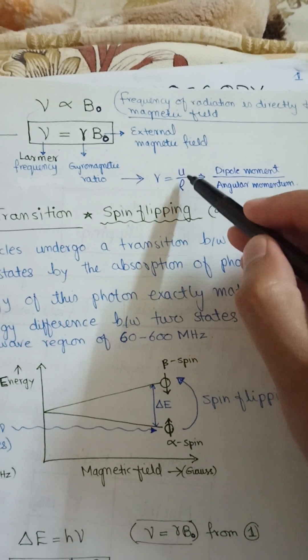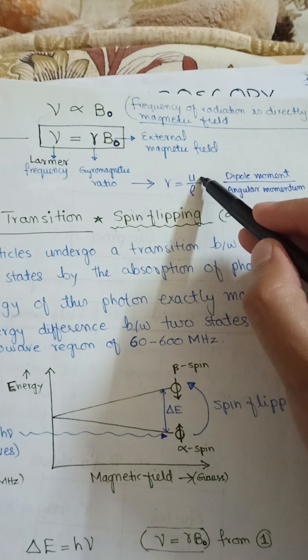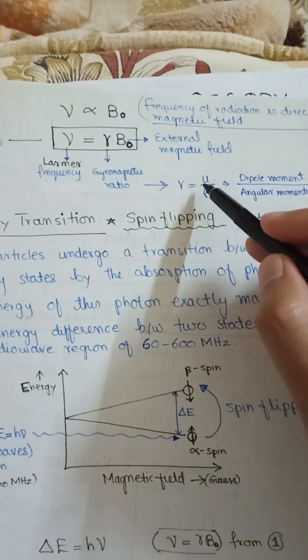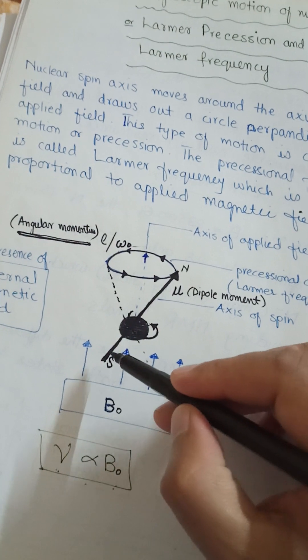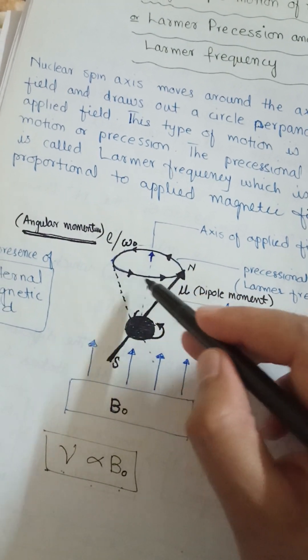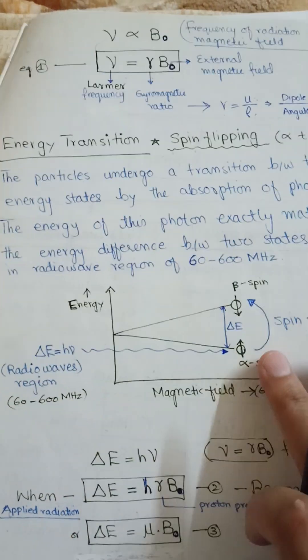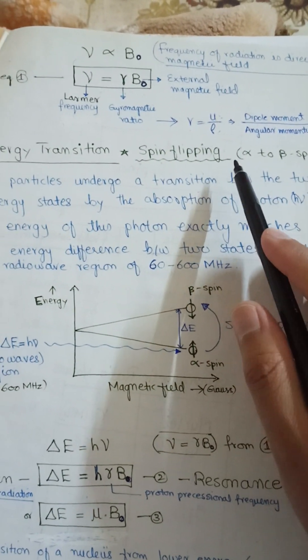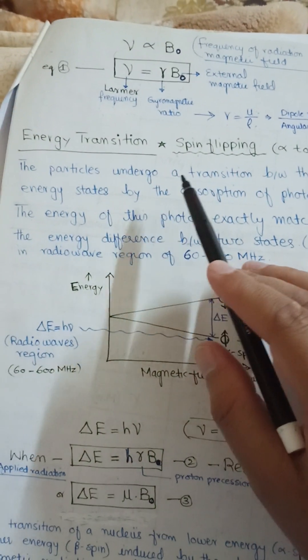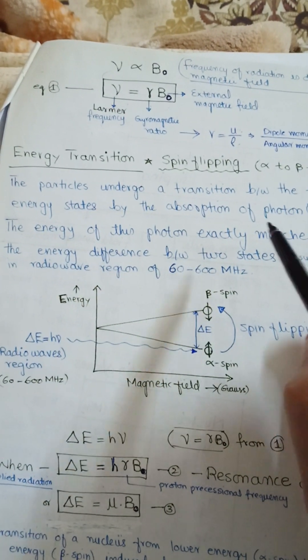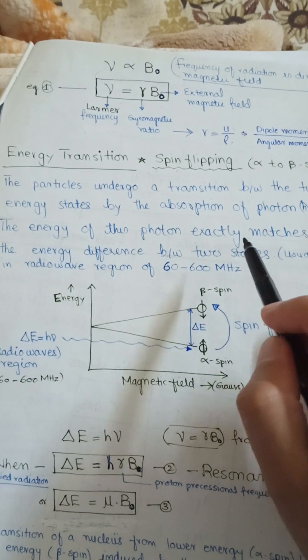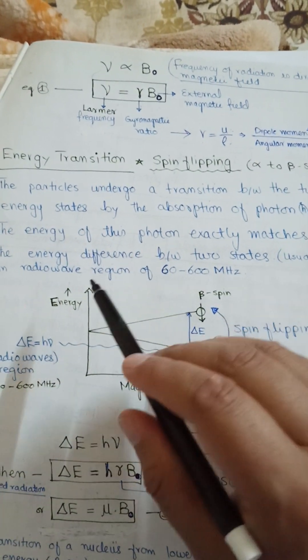The dipole moment is represented by mu and angular momentum by rho, and the gyromagnetic ratio is the ratio of dipole moment to angular momentum of the nuclear spin. For energy transition or spin flipping from alpha to beta spin state, the particles undergo a transition between the two energy states by absorption of photons. The energy of this photon exactly matches the energy difference between the two spin states.